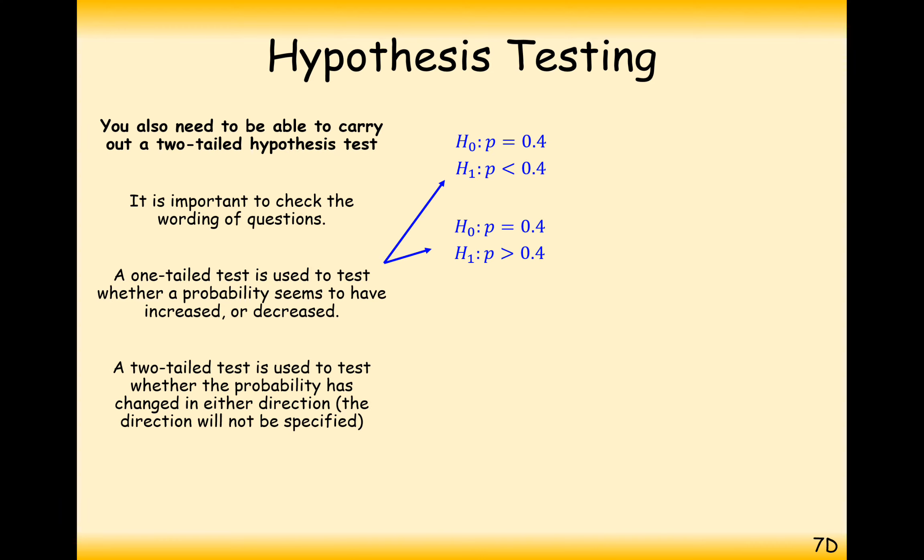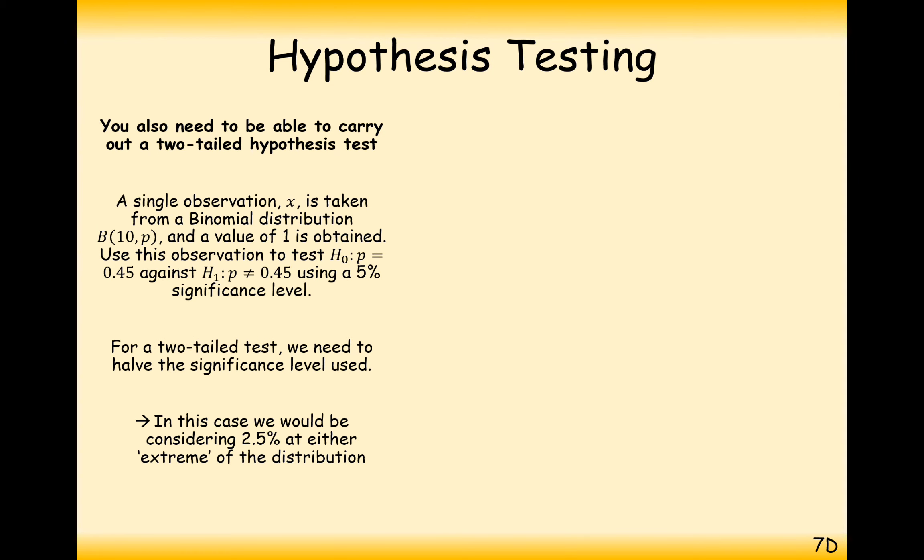So whether it's lower or higher, and in which case the 5% significance level is going to be split up into a higher probability, in which case we test at the 2.5% significance level, or a lower value of P, in which case we test to the 2.5% significance level. And you always split it in half, so if it's 1%, it's now half a percent, if it's 10%, it's now 5%.